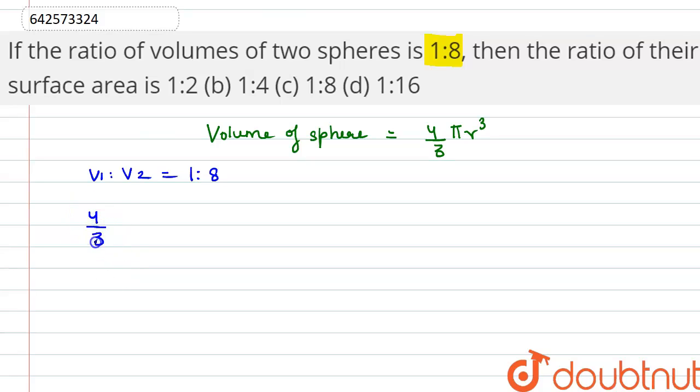as 4 by 3 pi r1 cube divided by 4 by 3 pi r2 cube equals 1 by 8. We can cancel out 4 by 3 pi from the numerator and denominator, so we get r1 by r2 whole cube equals 1 by 8.